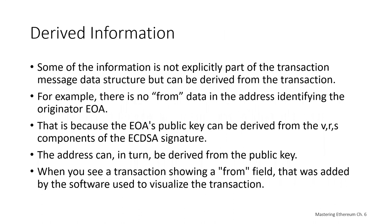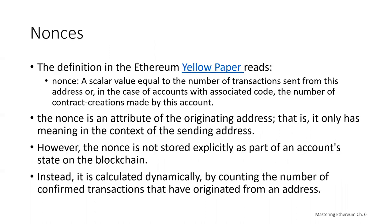Some information is derived from the transaction rather than explicitly included. For example, there's no 'from' field identifying the originator's externally owned account — the address can be derived from the public key. When you see a transaction showing a 'from' field, that was added by the software used to visualize the transaction. Other metadata frequently added by client software includes the block number once mined and a transaction ID, which is a calculated hash of the transaction.